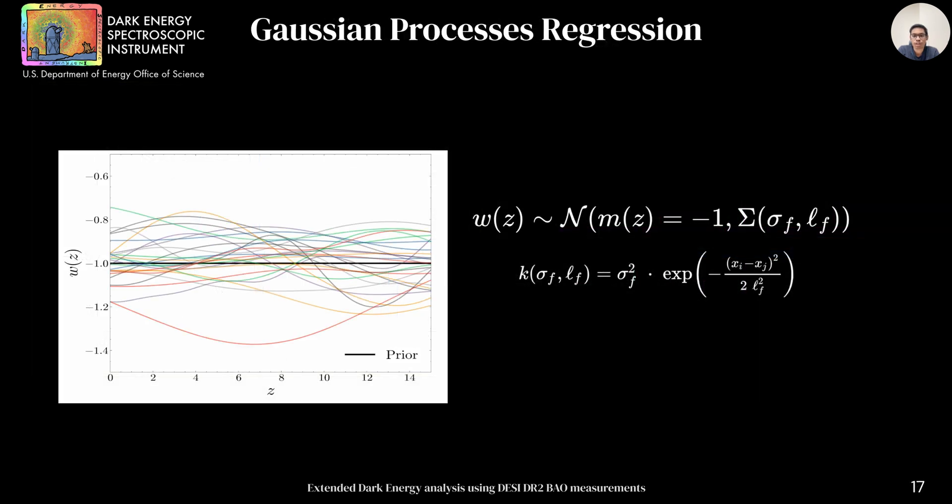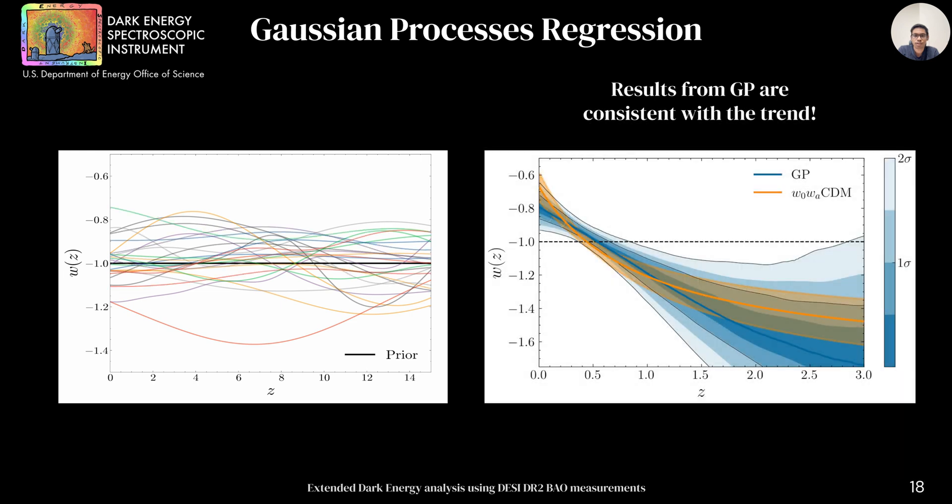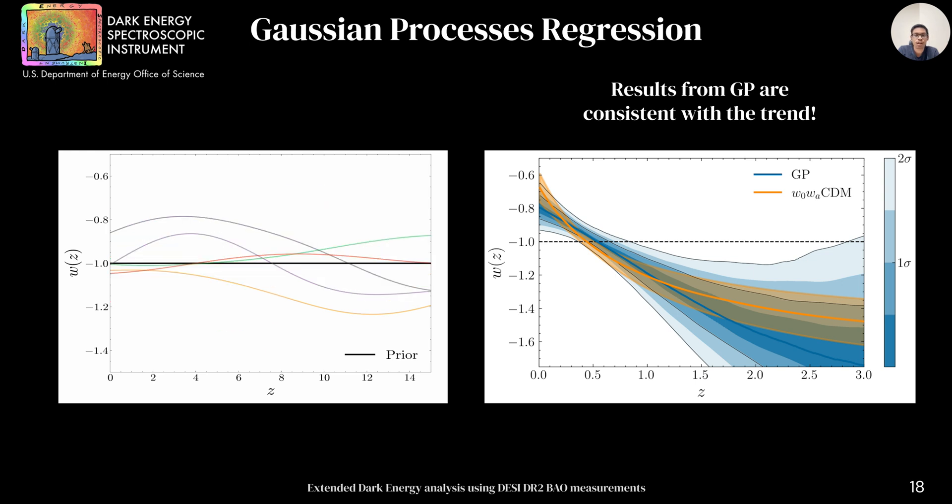Another non-parametric technique we cover is Gaussian process reconstruction, where instead of writing any parametric form, one can use Gaussian process regression to draw samples of w of z from the functional space and test them against the data. On the right, we show equation of state reconstruction from Gaussian process using DAISI plus CMB plus Union 3 and find our posteriors are consistent with trends seen in w0wa.